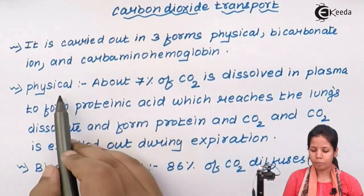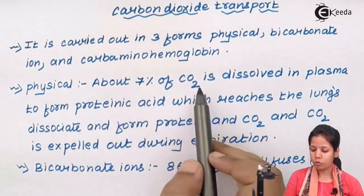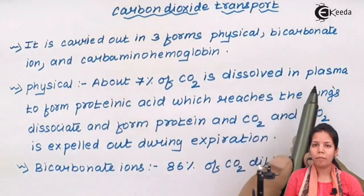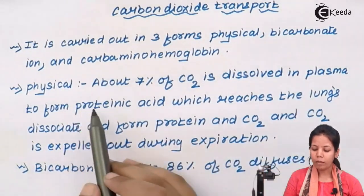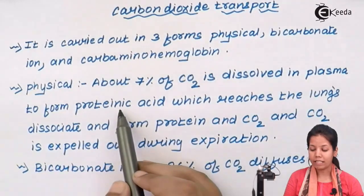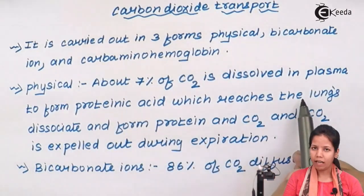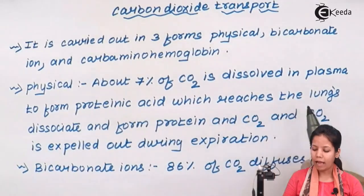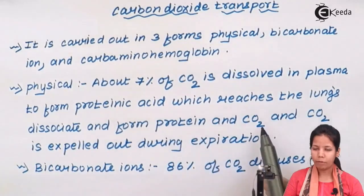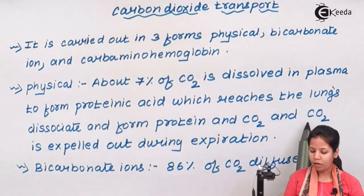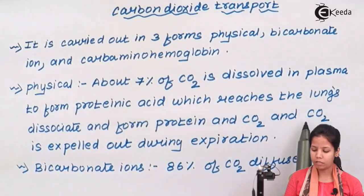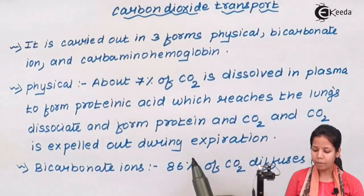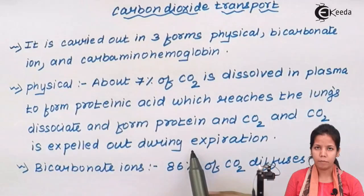In the physical form, about 7% of CO2 is dissolved in the plasma, one of the components of blood, to form a carbonic acid. Once this acid is formed, it is transported to the lungs. There, dissociation takes place, protein and carbon dioxide are separated, and carbon dioxide is exhaled out of the body.